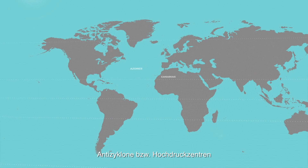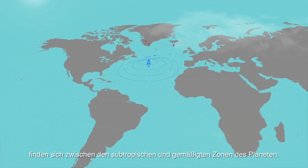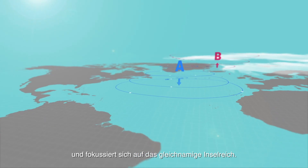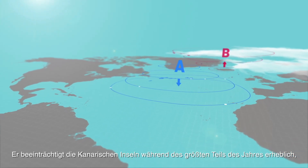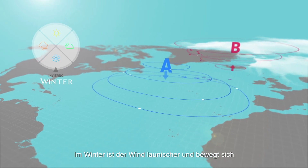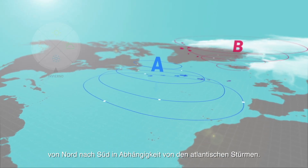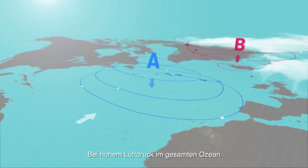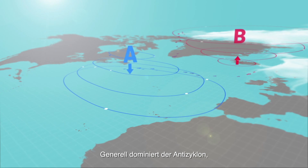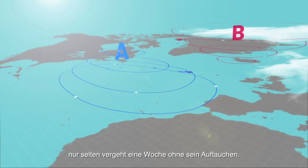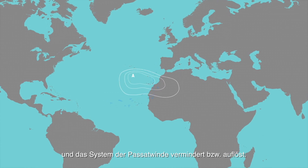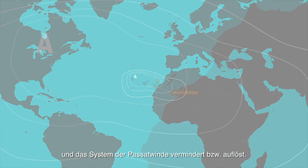Anticyclones, or high-pressure centers, are found between subtropical regions and the cooler areas of the planet. The Azores anticyclone usually spreads throughout the North Atlantic and focuses on the Canary Islands. It affects the Canary Islands for most of the year, though it withdraws occasionally between autumn and spring. In winter it is more inconsistent and moves north to south depending on the position of the Atlantic depression. In summer, the high pressure is rarely away for more than a week.